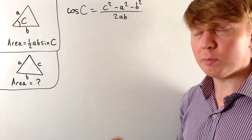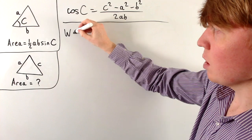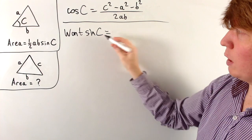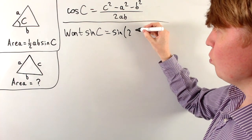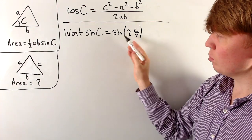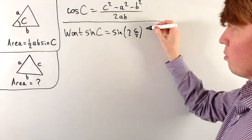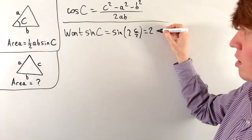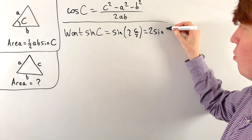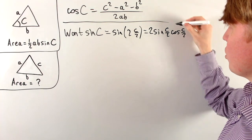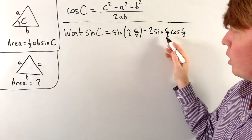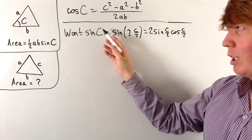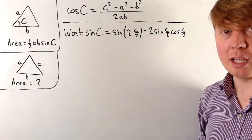So we'll do this in a roundabout fashion. We want an expression for sine C, and to do this we write sine C as sine of 2 times (C/2). Using the double angle formula, sine(2 theta) becomes 2 sine theta cos theta, so with theta equal to C/2, we get 2 sine(C/2) cos(C/2). It turns out we can get nice expressions for sine(C/2) and cos(C/2) from cos C, whereas going straight from cos C to sine C doesn't work out as neatly.